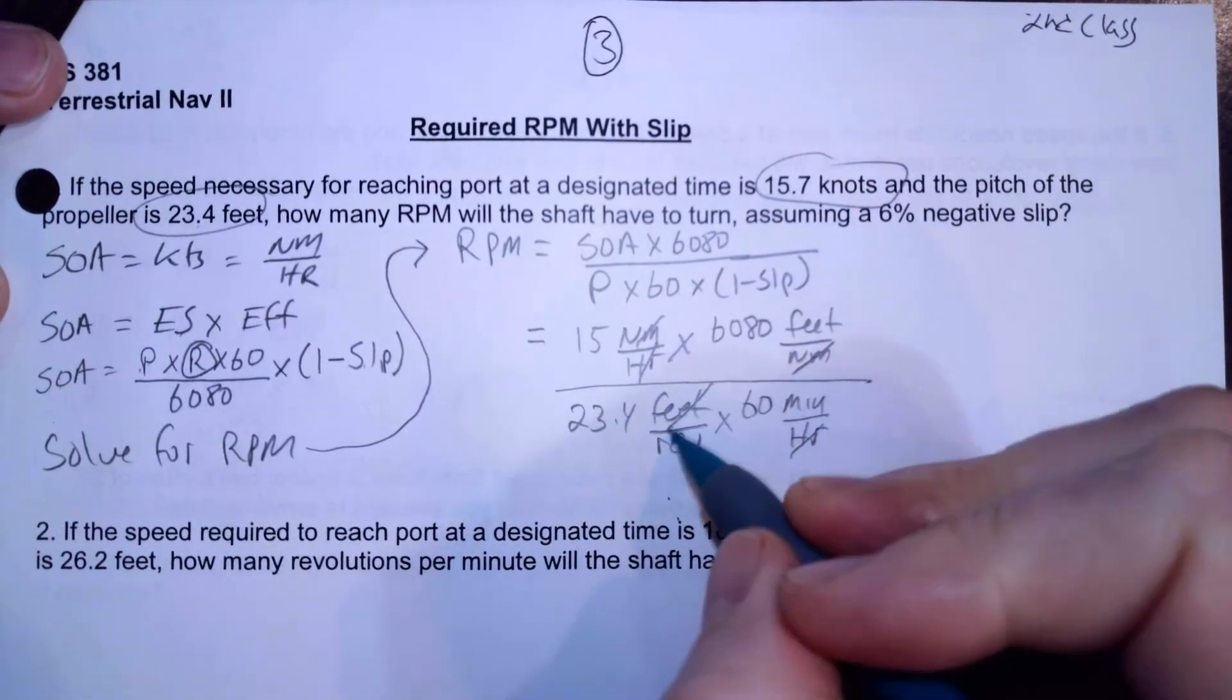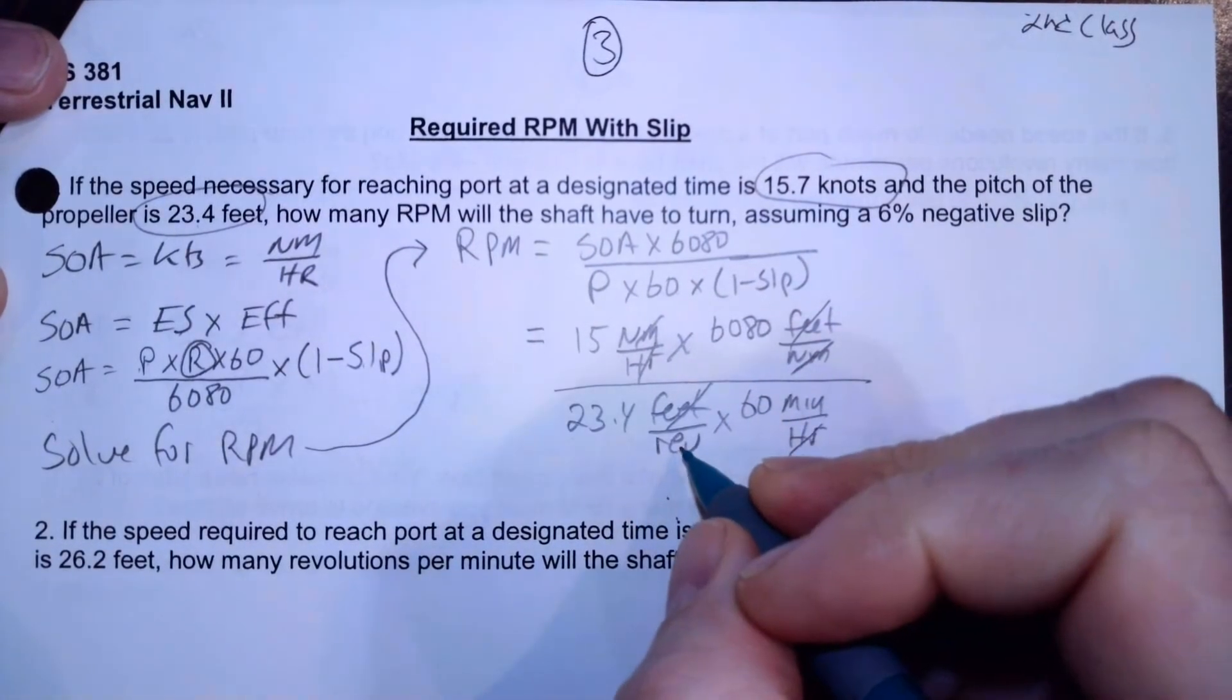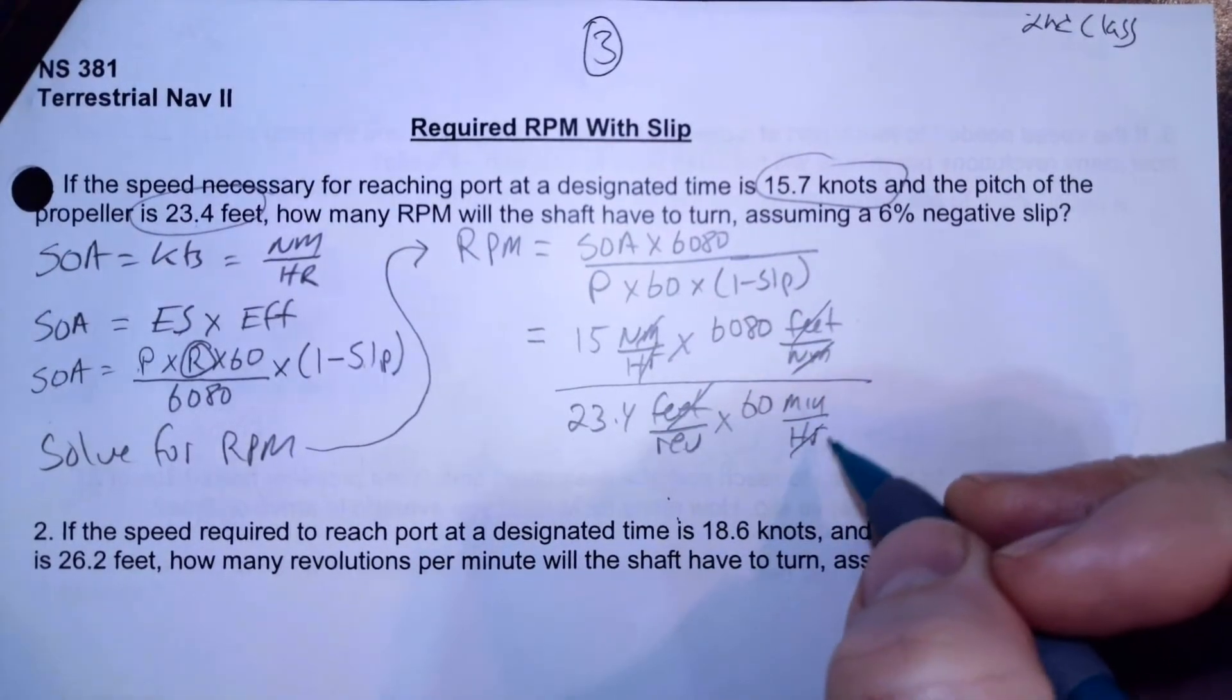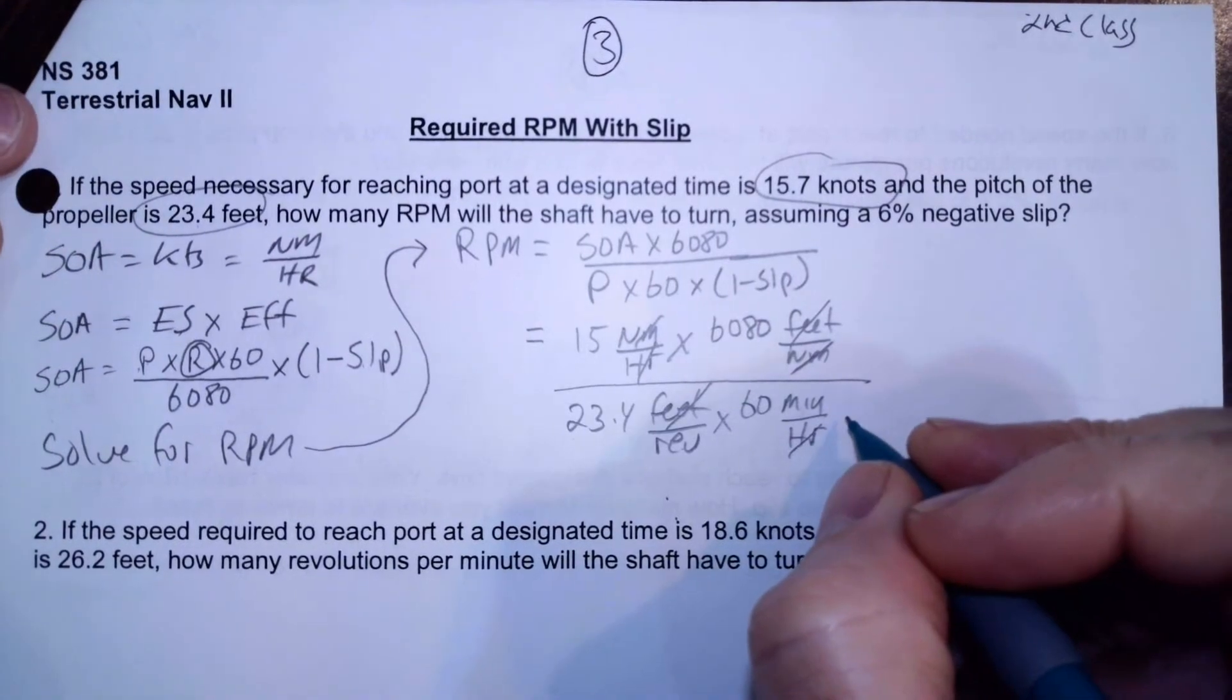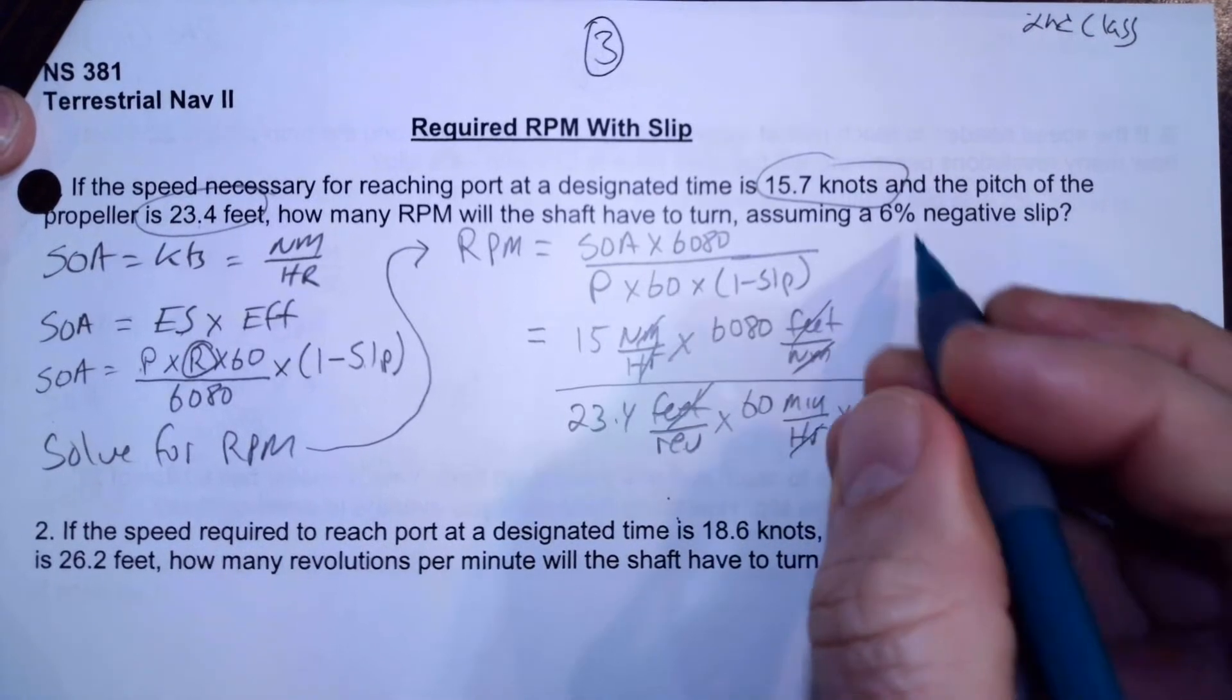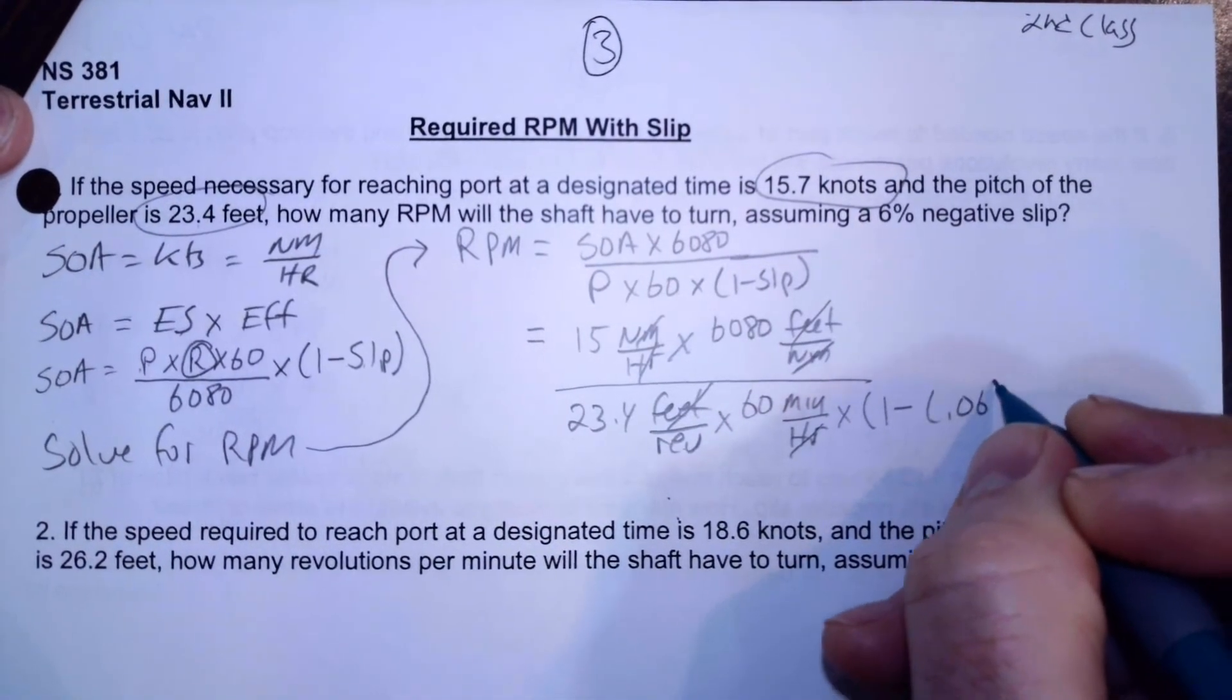So now the feet cancel out between the numerator and denominator. So now I've got minutes per revolution, and those are the units I'm going to want because it's one over minutes per revolution, which when I do everything is going to flip over to revolution per minute. And the last thing I need is to put my performance in, which is one minus my slip is 0.06.